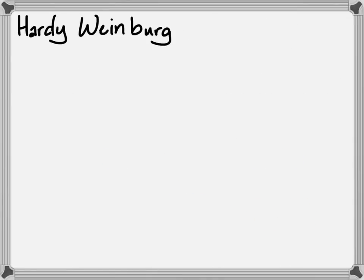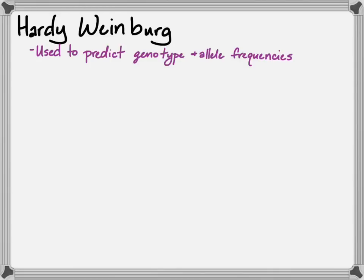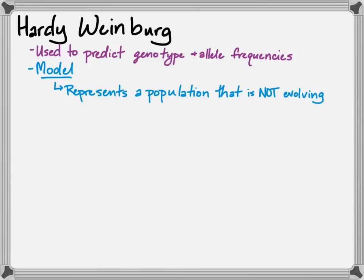Picking up where we left off, we're going to talk about Hardy-Weinberg, which involves equations that help us predict genotype frequencies from allele frequencies. It's a model, so it's not necessarily reality, but it is used to predict reality. It represents a population that is not evolving.